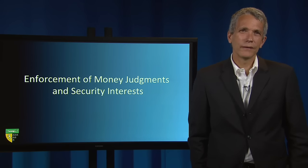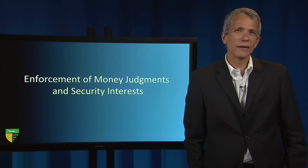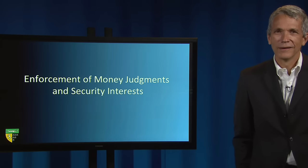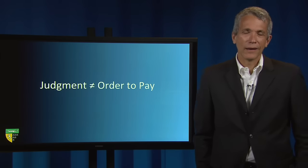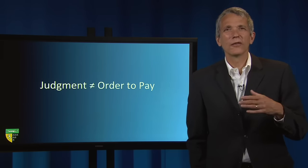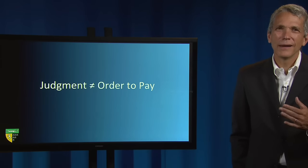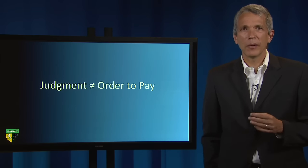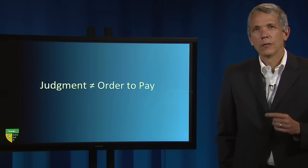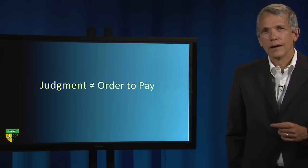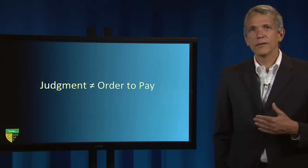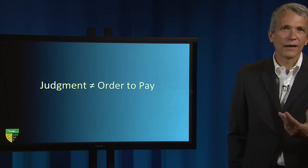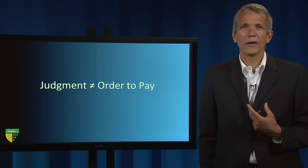The successful plaintiff in a civil action will typically obtain a money judgment against the defendant. Many beginning law students are surprised to learn that a judgment in most jurisdictions does not order the defendant to pay a particular sum. Rather, a judgment declares that the plaintiff shall have recovery of the defendant, the stated sum, and have execution thereof.